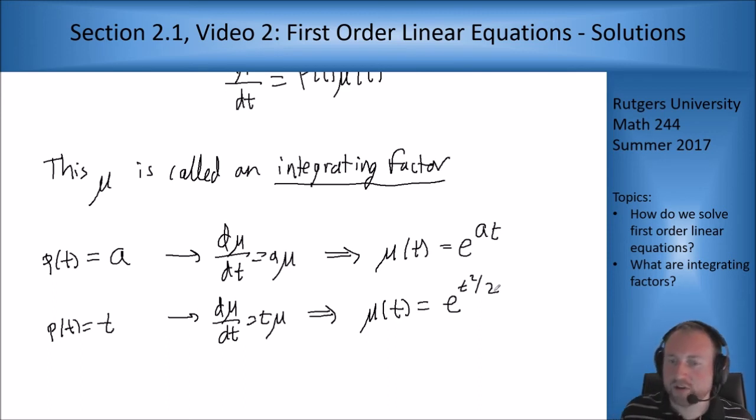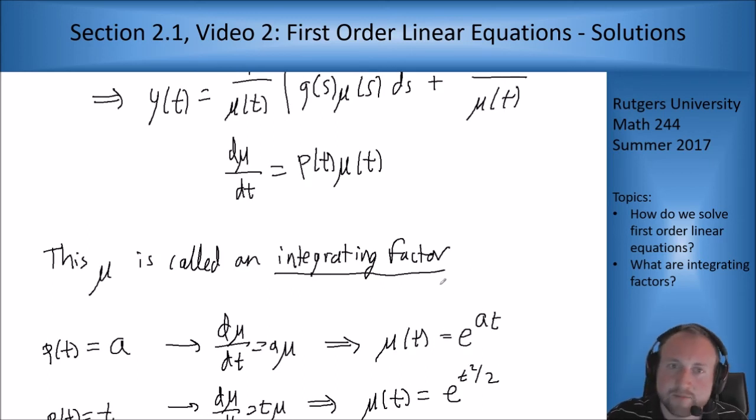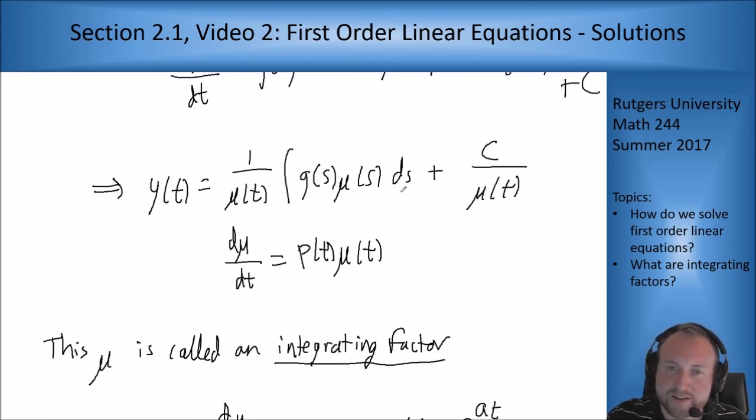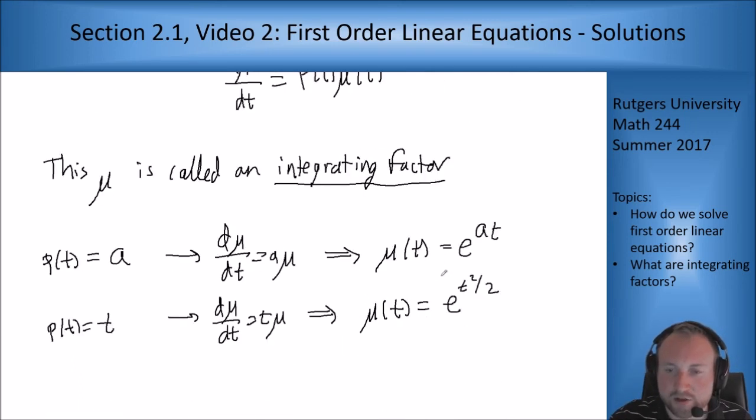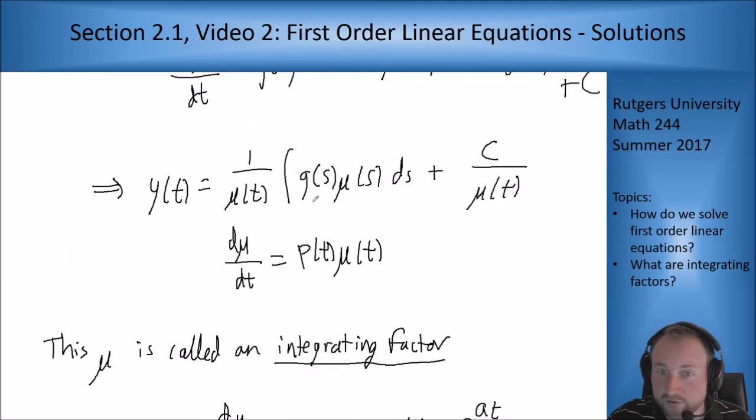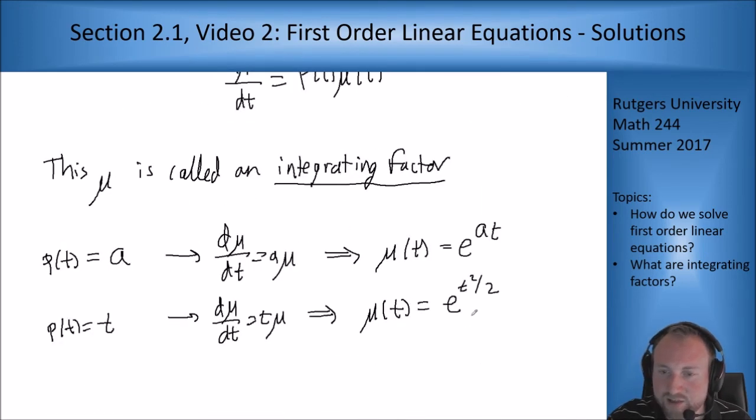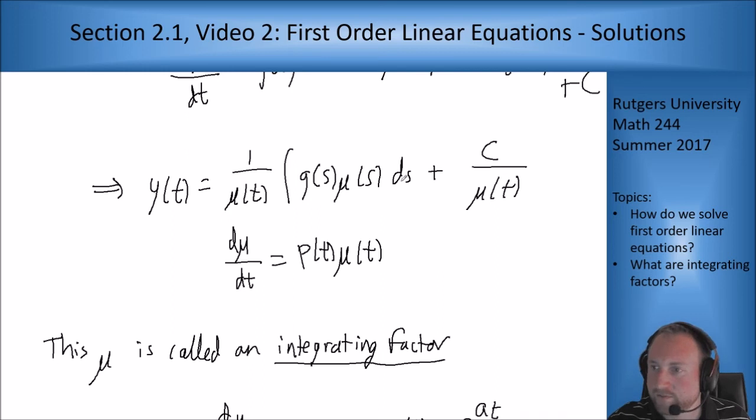Now what you'll notice here, for some of these, depending on what g is, I may not be able to integrate this expression in here. And that's fine. Sometimes you won't be able to. A lot of times you will, and you'll be able to see, okay, this simplifies and I can integrate. But if you can't, that is a possibility. For instance, e to the t squared over 2 is not integrable normally. So if g was 1, e t squared over 2 wouldn't be able to integrate that. You just wouldn't be able to, and that'd be it. You'd have to leave it in this integral form and just move on from there and be done with the problem from there.